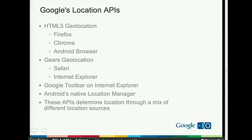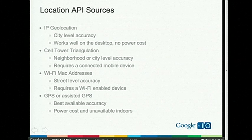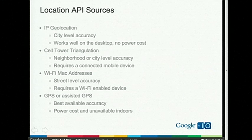The first location source, which most of you are probably familiar with, is IP geolocation. This often gives city-level accuracy — in some countries only country-level, but in the US it works pretty well at the city level. It's really easy to use. Every HTTP request you receive has an IP address, and if you use Google's Ajax API and send that IP address off, you can get a latitude and longitude for the city the user's in. There's no power cost, it's fast, and it's not super accurate but sometimes good enough.